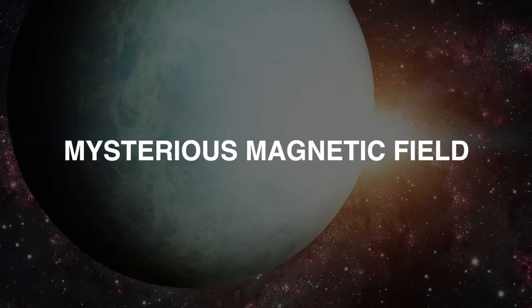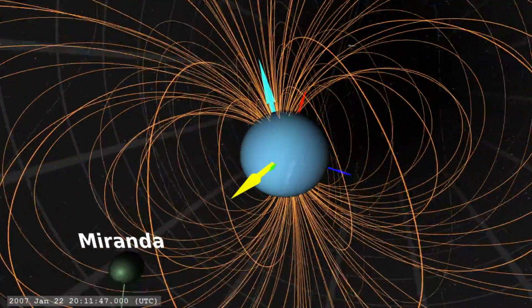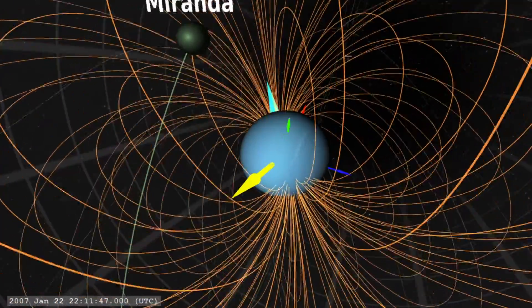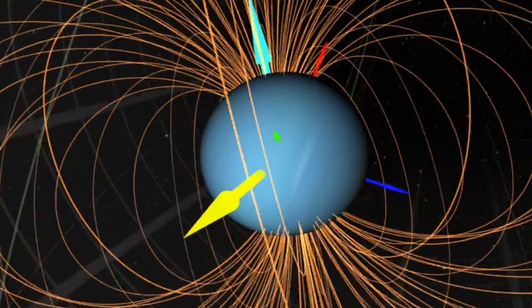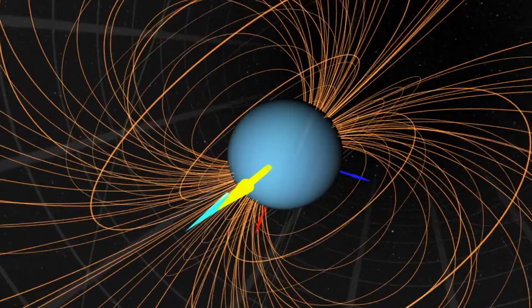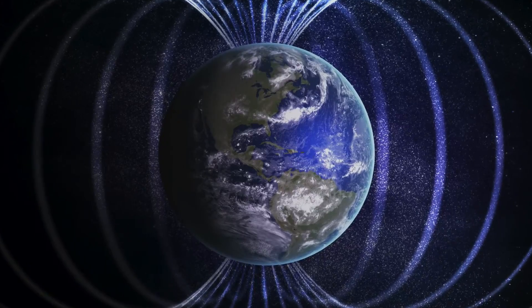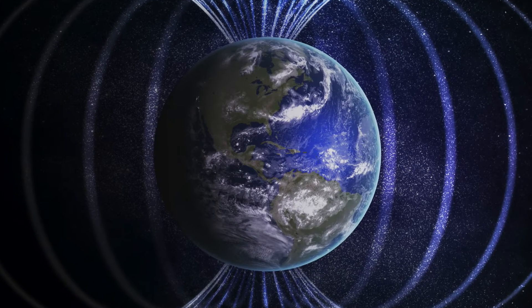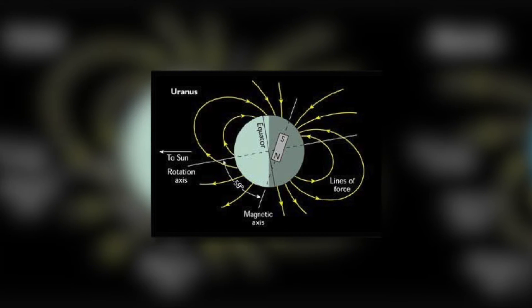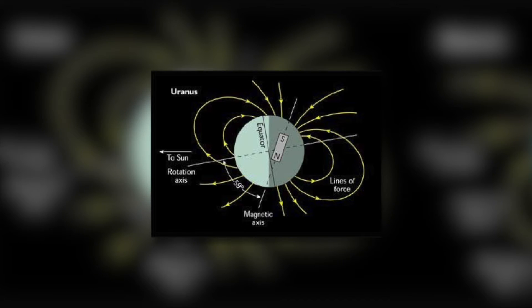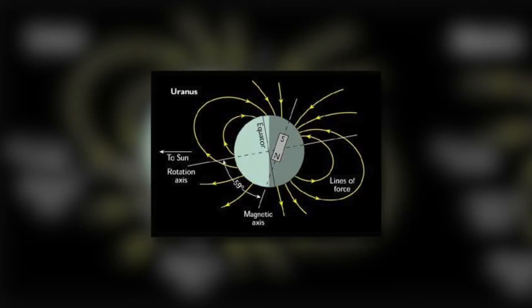Mysterious magnetic field. The magnetic poles of Uranus are not aligned with the geographic poles. This aspect is mysterious because the Earth's magnetic field is tilted by only 11 degrees and has a bar magnet. The Earth's magnetic field has both north and south poles. In contrast, the magnetic field of Uranus is tilted by about 59 degrees and shifted in such a way that the magnetic field does not pass through the center of Uranus.